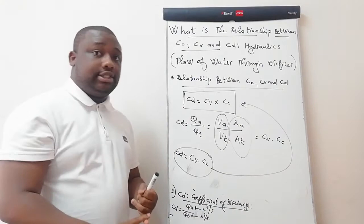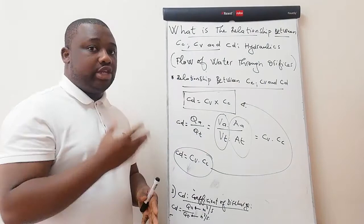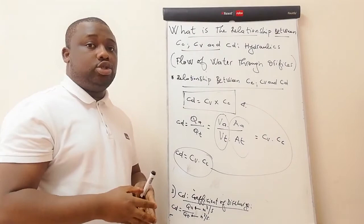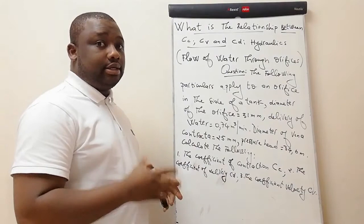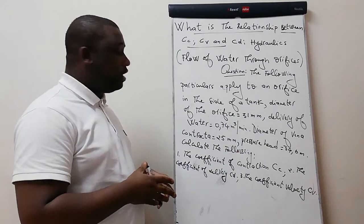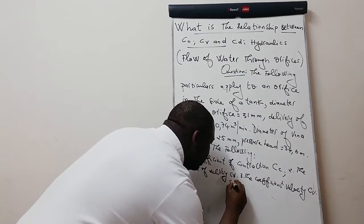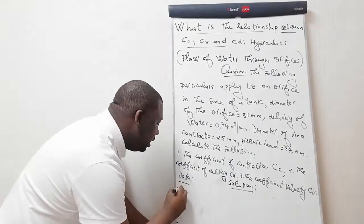Now that you know CC, CV, CD, and their relationship, we can get into our question. The question tells you: the following particulars apply to an orifice in the side of a tank. Diameter of the orifice — this is the theoretical diameter, DT — is 31 millimeters, which equals 0.031 meters. The delivery of water — the actual discharge, QA — is 0.74 cubic meters per minute.